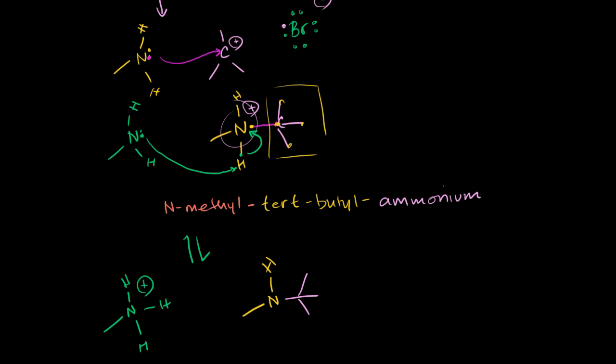So now this has become, as I just said, this is methylammonium. But this over here is N-methyl. Once again, the N tells us that this methyl group is bonded to the nitrogen. N-methyl-tert-butylammonium, and now instead of calling it butylammonium, it's now butylamine. Tert-butylamine.